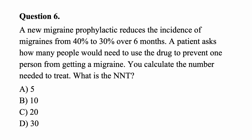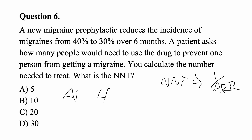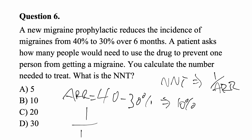Question six: A new migraine prophylactic medication reduces the incidence of migraines from 40% to 30% over six months. How many people would need to use the drug to prevent one person from getting a migraine? NNT equals 1 over the absolute risk reduction. Absolute risk reduction is 40% minus 30% equals 10%. So NNT equals 1 over 10%, which is 10. The answer is B.